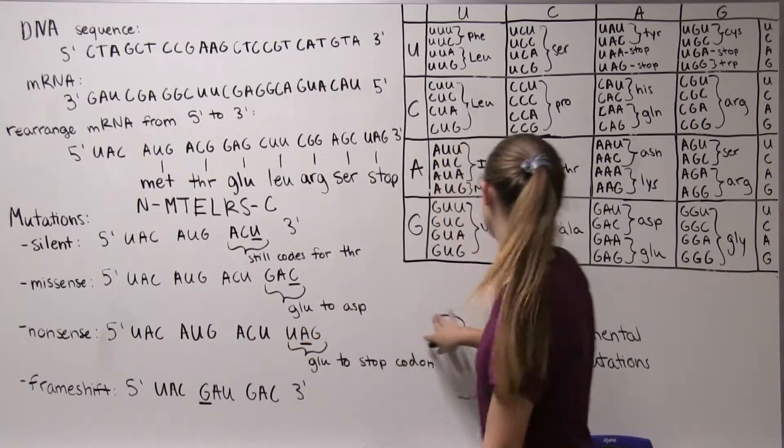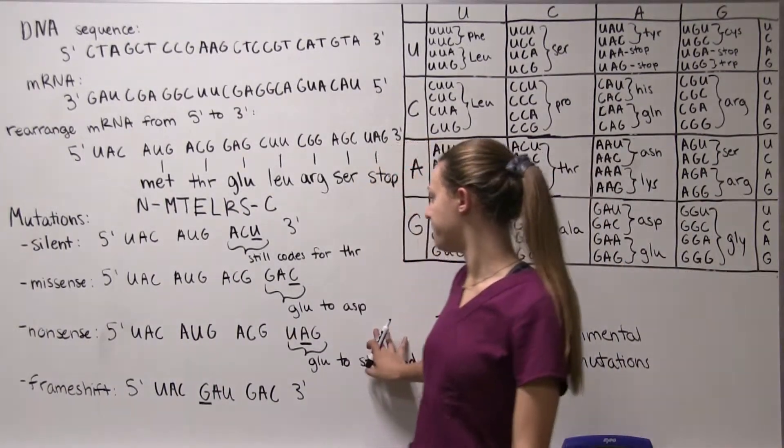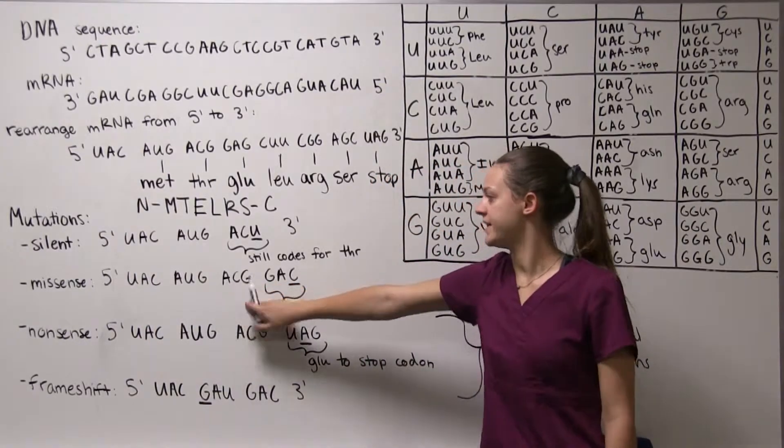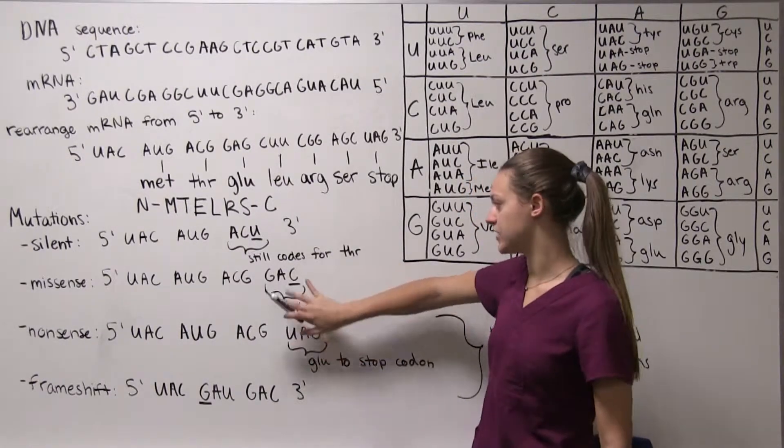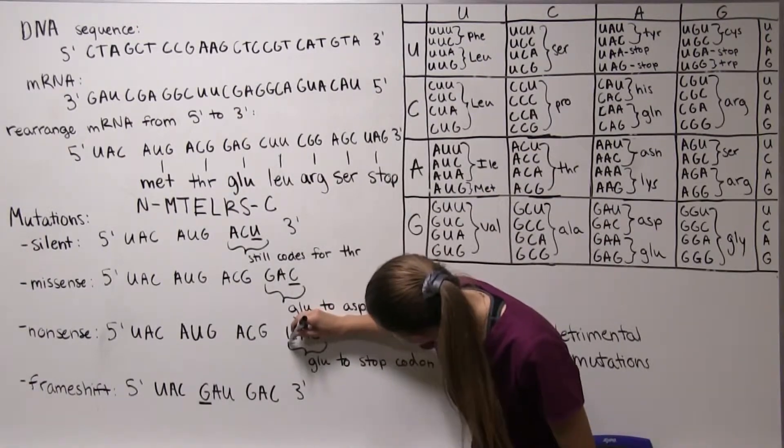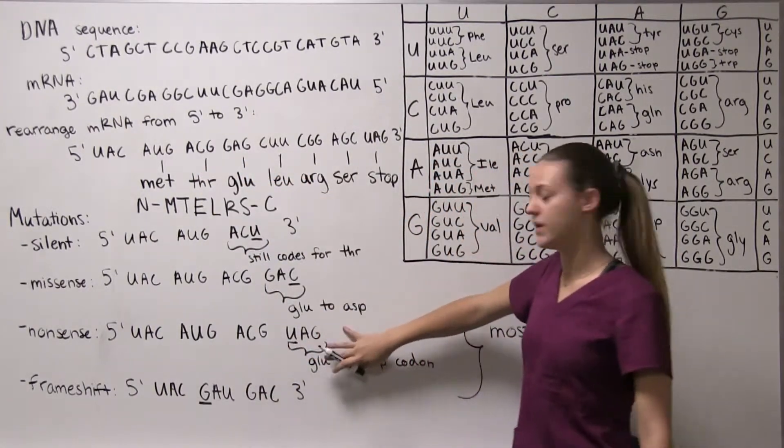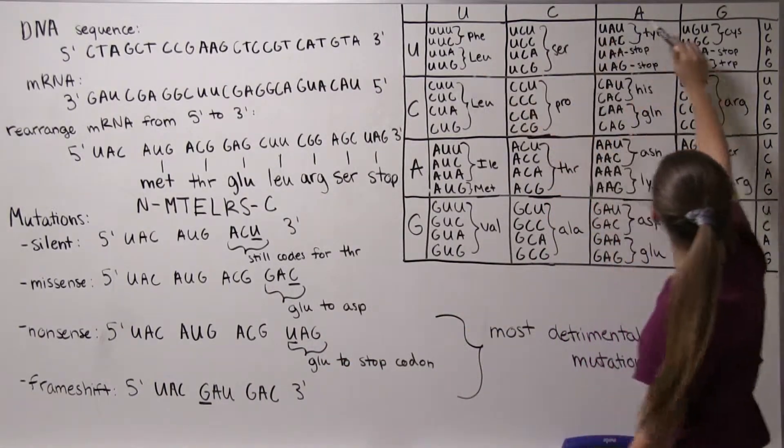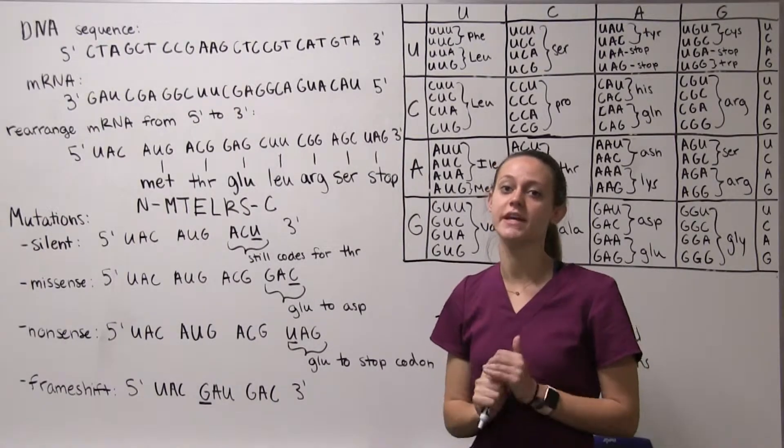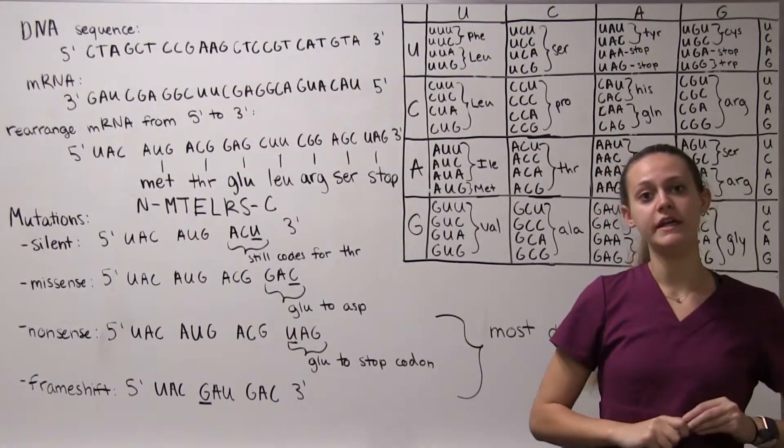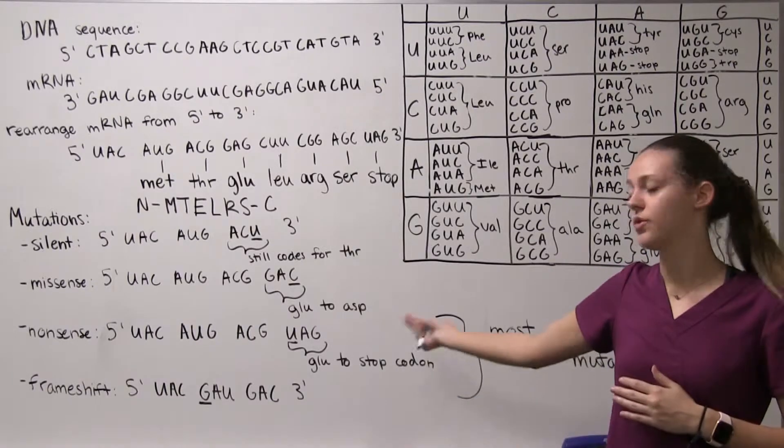And now on to the more detrimental mutations, those are going to be your nonsense mutations and your frameshift mutations. Moving on to nonsense mutations, again we have the same sequence UACAUGACG and then here we're going to have our mutation but instead of mutating the last codon we're mutating the first codon. This U here was mutated from G. Originally we had GAG and now we have UAG. When we go here we have UAG and we see that this is a stop codon. That is what a nonsense mutation is, when a mutation results in an early stop codon and this will almost always completely make your protein dysfunctional because you don't have the rest of your peptide sequence.